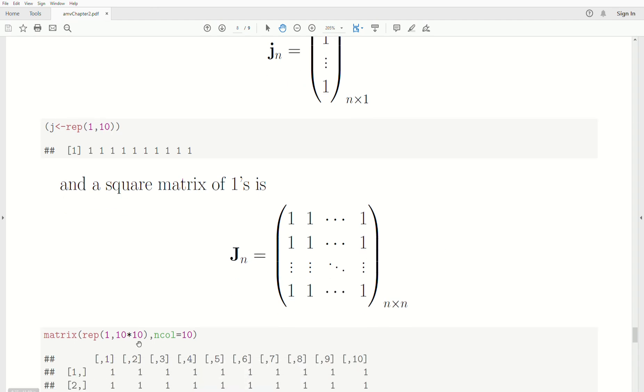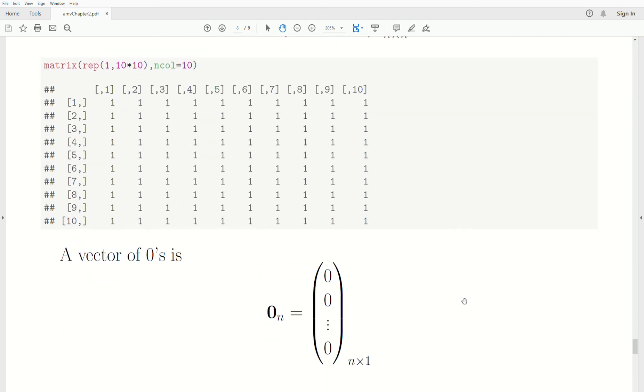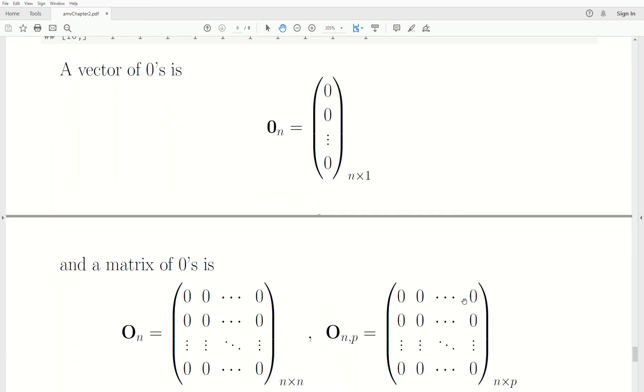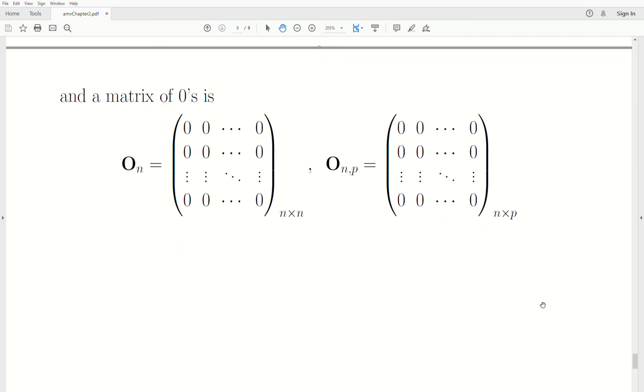And the R code, as always, I'll post the R code in the comment section. And then to end it, we also have vectors and matrices of all zeros, which are also sprinkled throughout the theory of linear models. So little o and big O, or capital O, lowercase o, are represented by a matrix of all zeros.